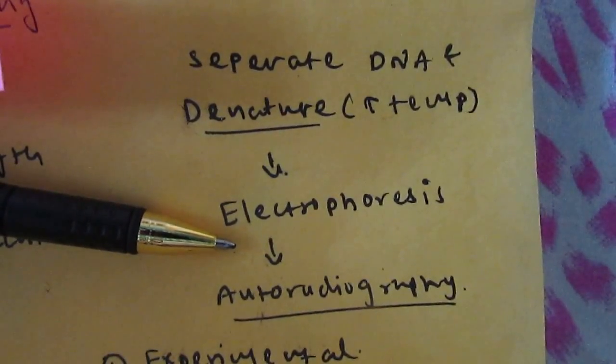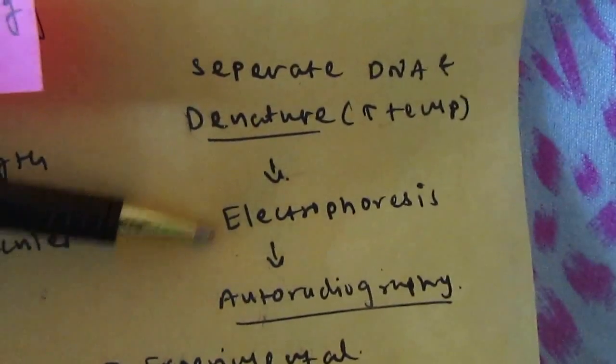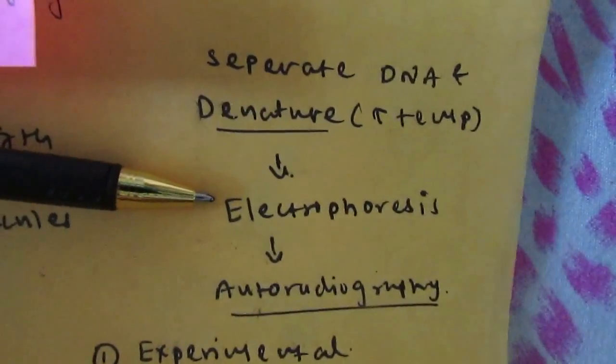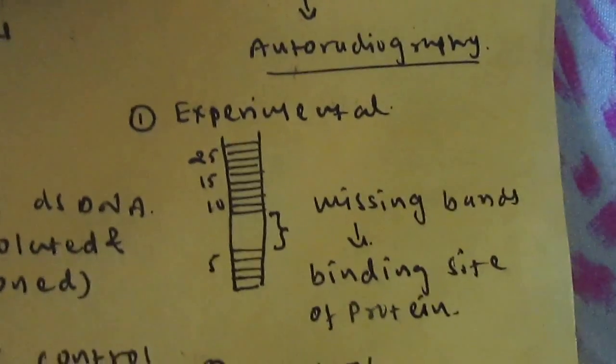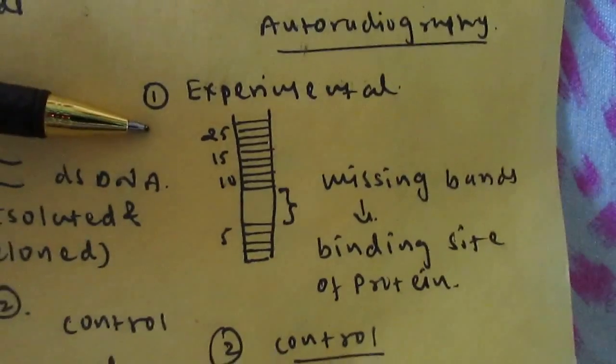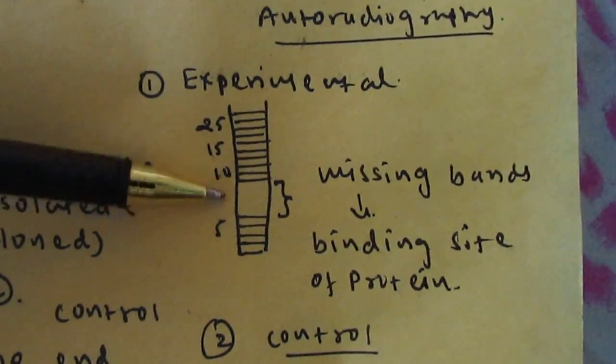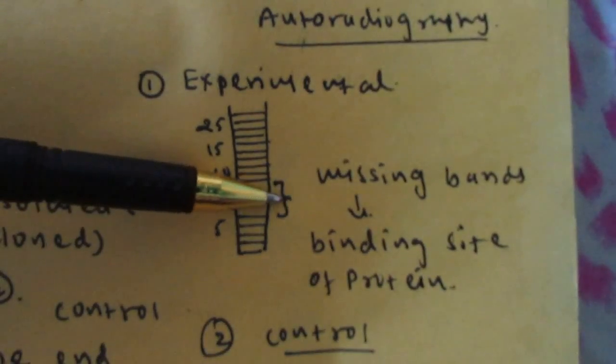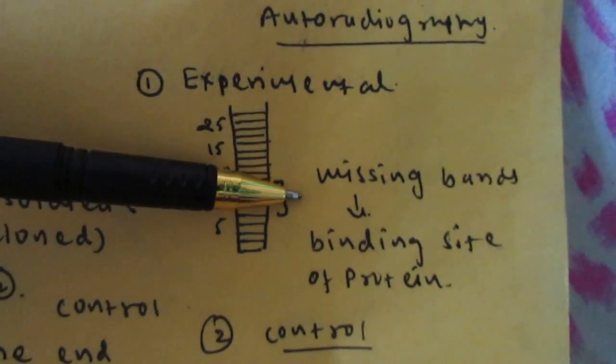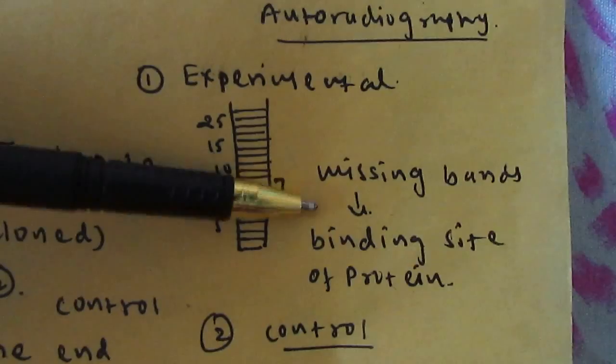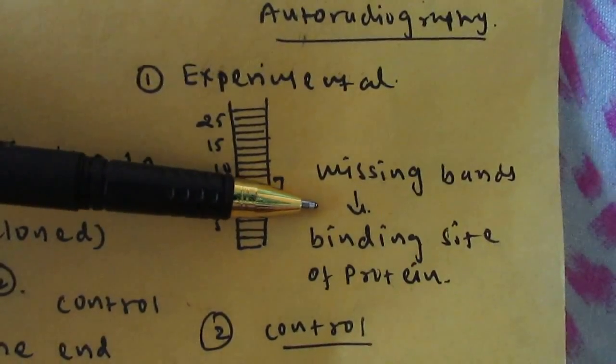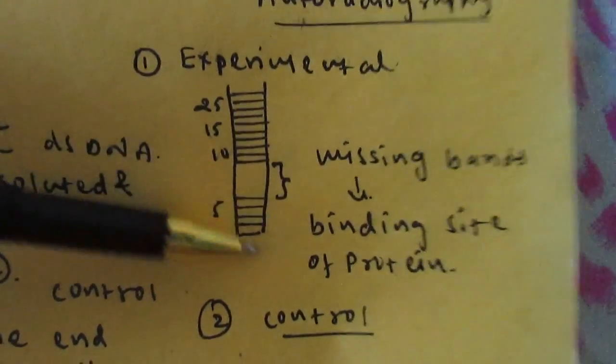What will be the result? In the experimental sample, we will get a five to six base pair missing band. This gap suggests missing bands, and these missing bands are particularly the location of the binding site of the protein molecule.